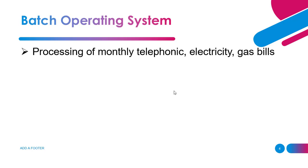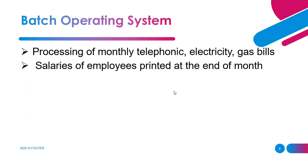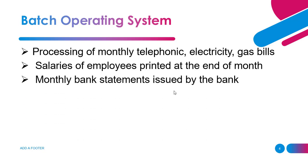Examples of batch operating systems include: first, the processing of monthly telephone, electricity, and gas bills — processing different utility bills is an example of a batch operating system. Second, the salaries of employees printed at the end of the month is also an example of a batch operating system.